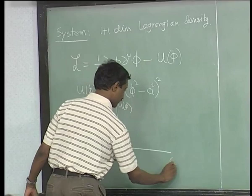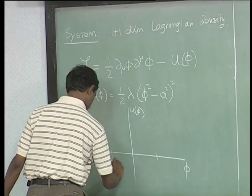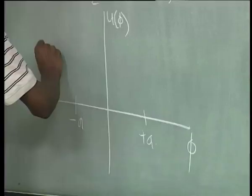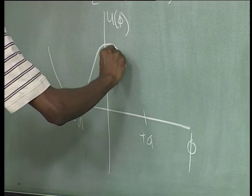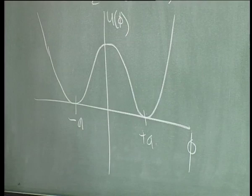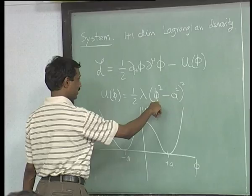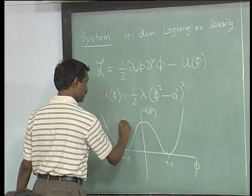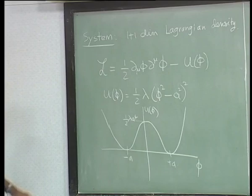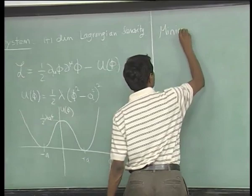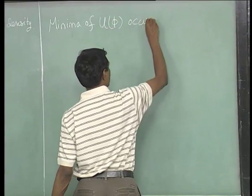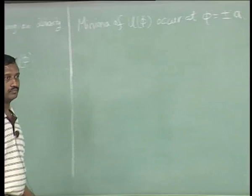If I plot U(φ) versus φ, it has two minima and looks something like this. It is supposed to be symmetric about φ going to minus φ. The value it takes at φ=0 is half λa⁴. The minima of U(φ) occur at φ equal to ±a.